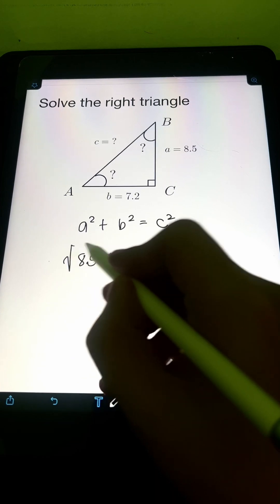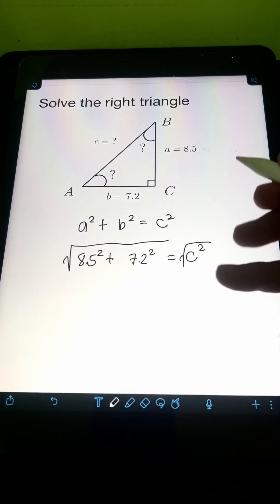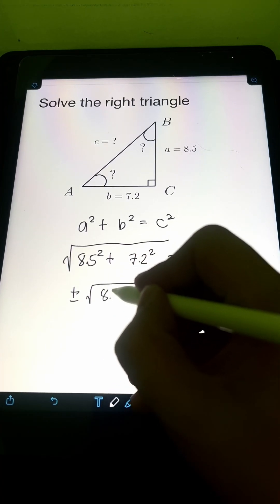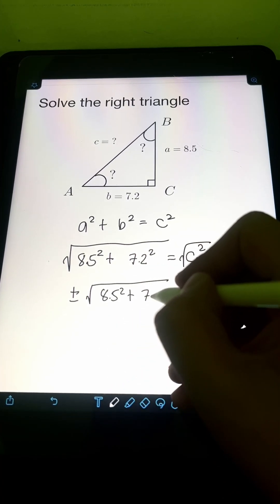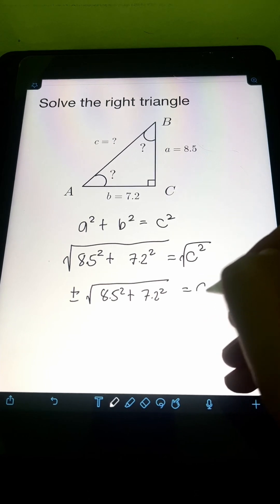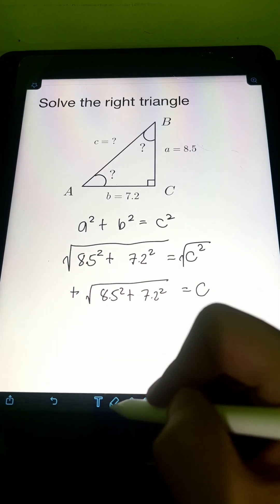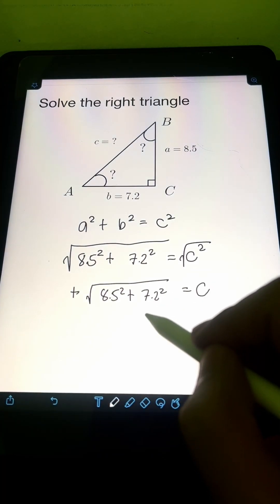So getting the square root of both sides, we will have plus minus the square root of 8.5 squared plus 7.2 squared equal to C. So we just need to get the positive value of C since there's no negative side.